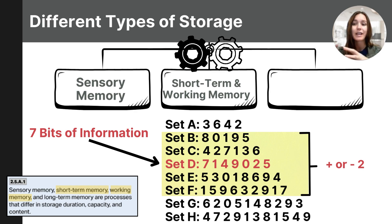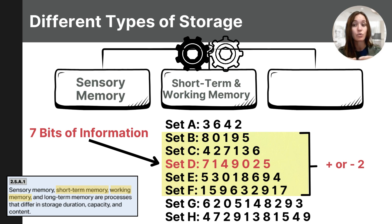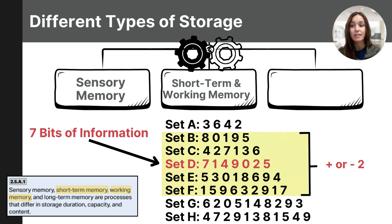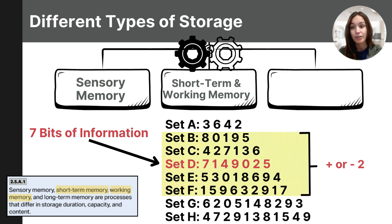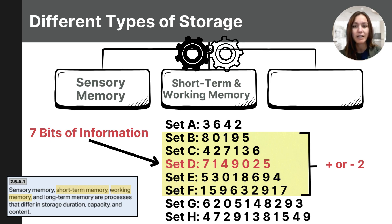Chunking, according to Miller, can allow you to hold more information by pairing those items into groups so that you remember groups instead of separate individual items. Further research confirms that if nothing is distracting us, we can recall about seven bits of information, but that number varies depending on the task. For letters, the number is closer to six; for words, it's closer to about five. Working memory capacity also varies by age — young adults tend to have a better working memory capacity than children and older adults.